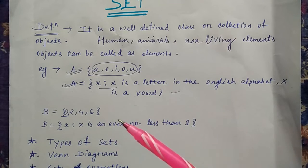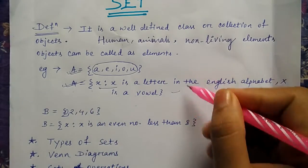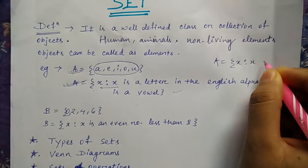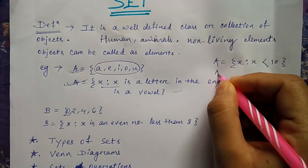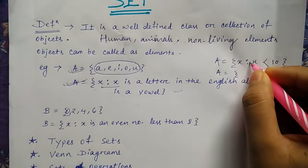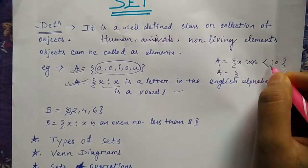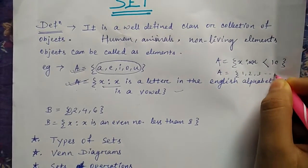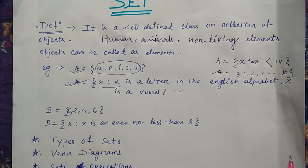That is a, e, i, o, u. Or you can write here that A = {x: 0 < x < 10}. In this case you can write that 1, 2, 3, up to 10. So here you got to know that A is the set which is having elements of 1 to 10.